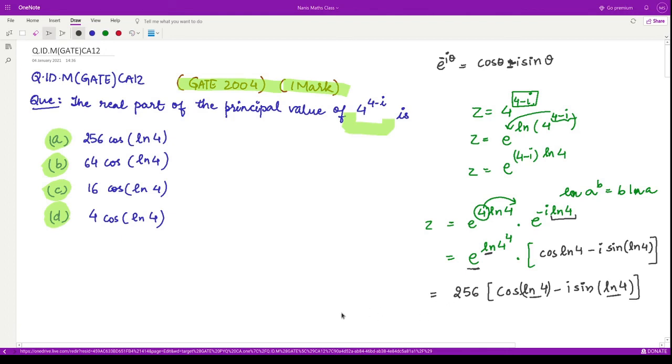This ln of 4 is in brackets, meaning it is the angle. So the real part of z is simply this first factor: 256 times cos of ln of 4. This is our answer.